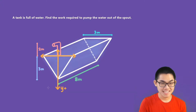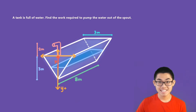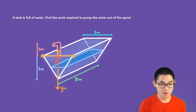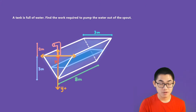The first step is to place an x and y axis with the y axis pointing downwards — this is the positive direction. The second step is to draw our layer of water. This is one layer of water, and you can imagine there are many, many layers from top to bottom. In order to empty this tank, we need to move each layer to the top and out of the spout. The distance from the origin to our layer of water can be considered as y.